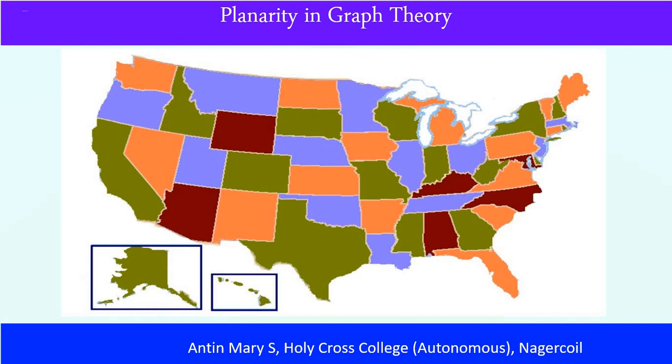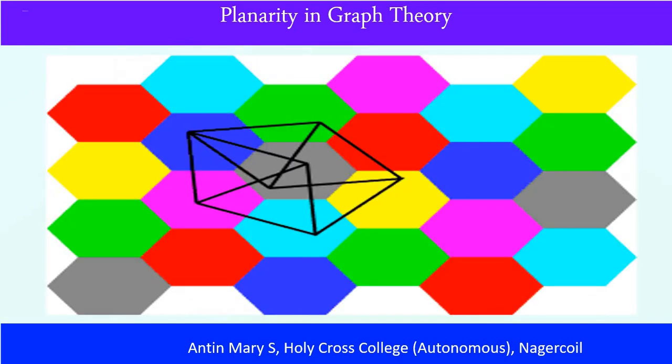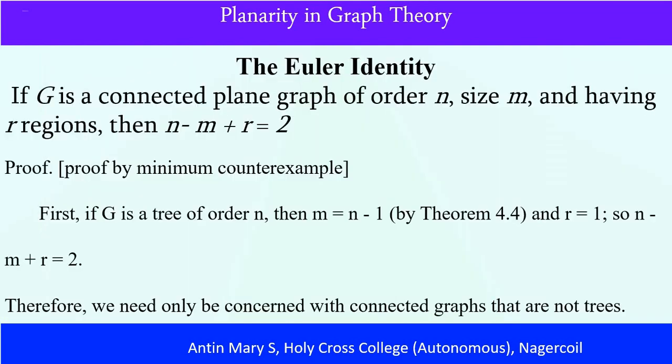In the map, planarity is dealt with extensively. In the map, the regions are denoted as vertices, and whenever two regions share a border they are made adjacent. Like that we draw and we talk about 5-color theorem, 4-color theorem, related to mapping.